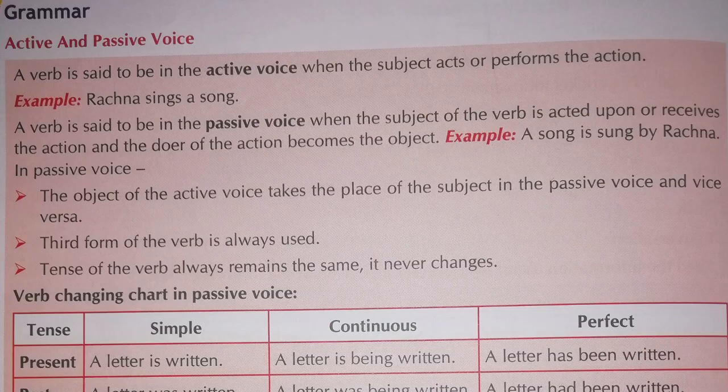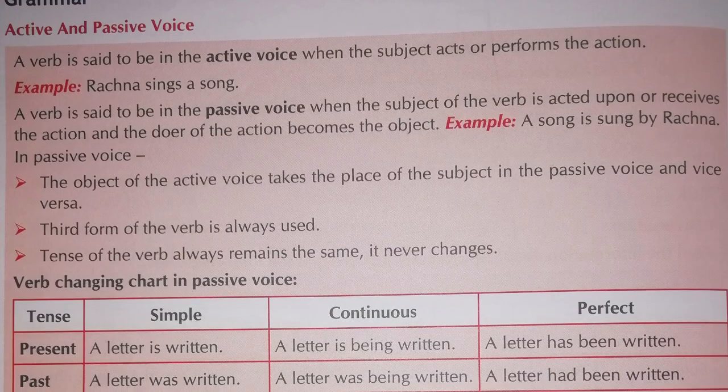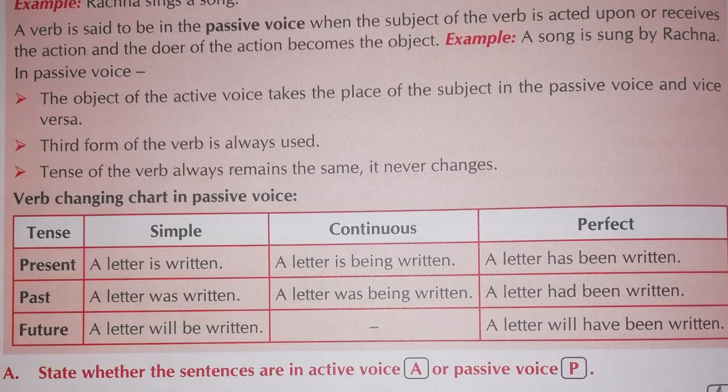Here are the rules for simple, continuous, and perfect tenses. In the present tense, V3 is used with 'is/are/am.' For past, 'was written' — this is also V3. For future, 'will be written' — still V3 is used.